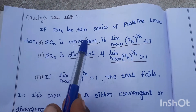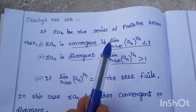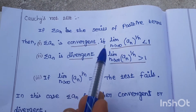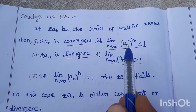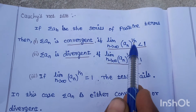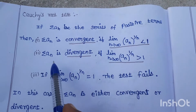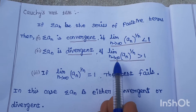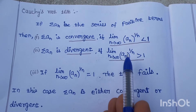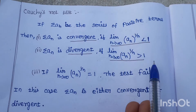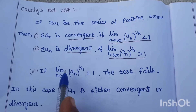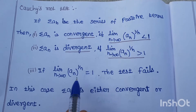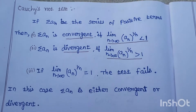If sigma a_n be a series of positive terms, then sigma a_n is convergent if limit n tends to infinity of a_n whole power 1/n is less than 1. Sigma a_n is divergent if limit n tends to infinity of a_n whole power 1/n is greater than 1. If limit n tends to infinity of a_n whole power 1/n equals 1, the test fails.